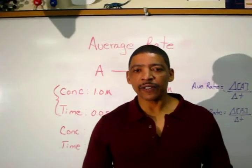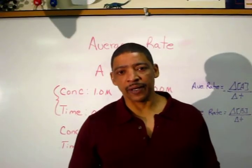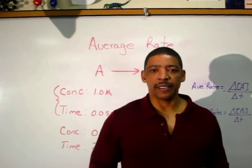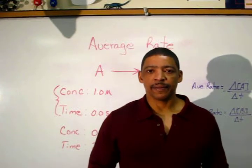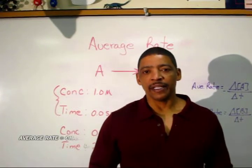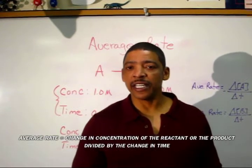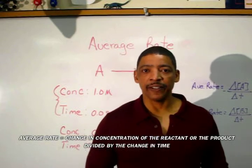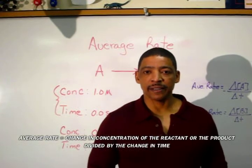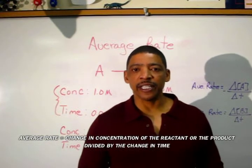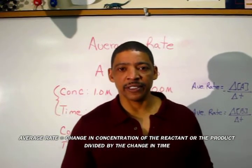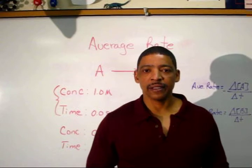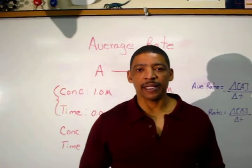The average rate of a chemical reaction may be calculated by dividing the change in concentration of the reactant, or the change in concentration of the product, over time.